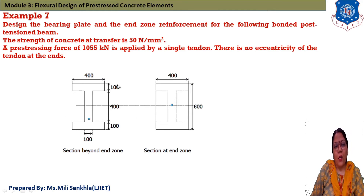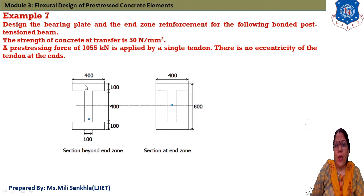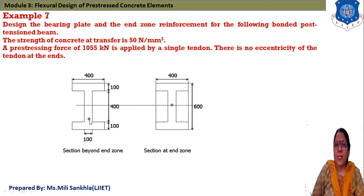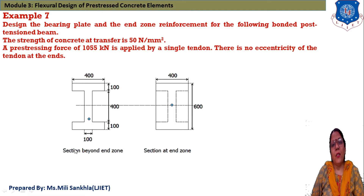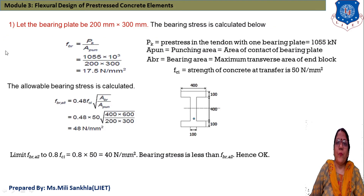In the first image, the section beyond the end zone has a width of 400 mm and total depth of 600 mm, with reinforcement at the CGS level below the neutral axis. In the second image, the section at the end zone shows reinforcement placed at the center where the neutral axis passes.